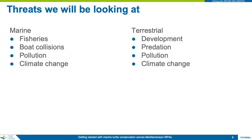Based on the previous threat matrices and the known conditions present in the Mediterranean, we will be looking at a range of threats. In the marine realm, we will be focusing heavily on fisheries, but will also cover boat collisions, pollution and climate change. For the terrestrial life stages, we will look at the threats of development and predation, and again the ubiquitous threats of pollution and climate change.